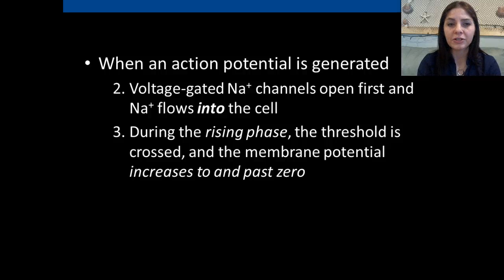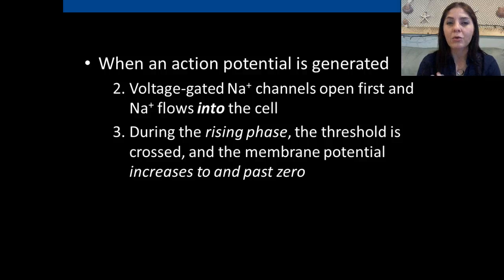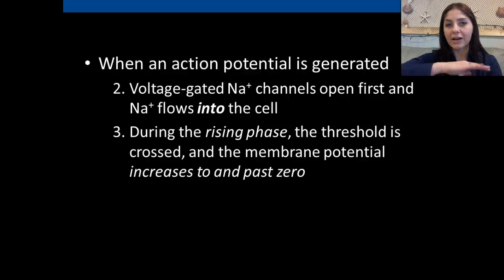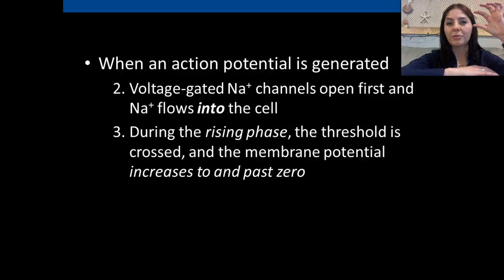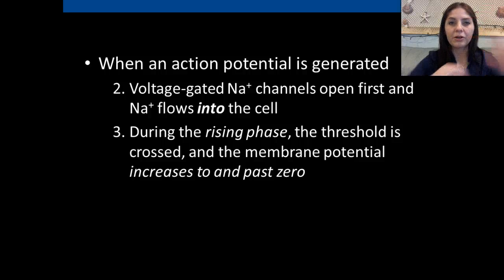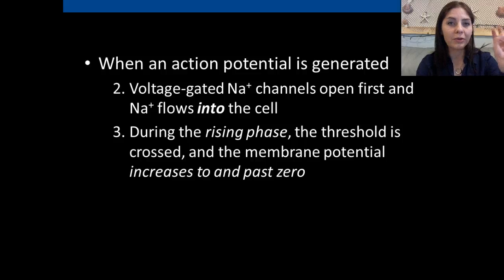When an action potential is generated, the voltage-gated sodium channel opens first and starts letting sodium into the cell, making the inside of the cell more positive. Think of it like the banana analogy — bananas are high in potassium, representing the neuron. If we put salt on the banana, that's sodium on the outside. When we open that channel, more sodium flows into the nerve cell, creating a more positive charge.